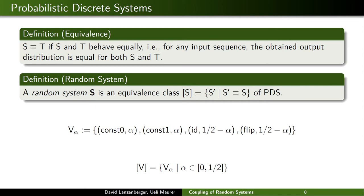As an example, one can see that the set {v_alpha for all alpha in [0, 1/2]} is exactly one equivalence class, meaning there exists no other PDS with this behavior. The advantage of this approach is that since our systems are now probability distributions over deterministic systems, we can lift results, statements, and definitions that are classically about probability distributions to the level of random systems. Our main contribution does this by considering the distance of two systems.